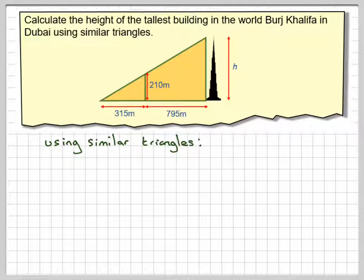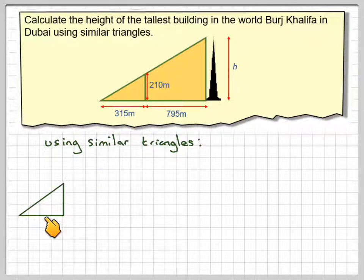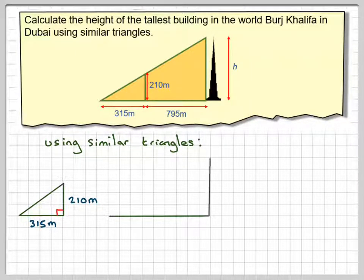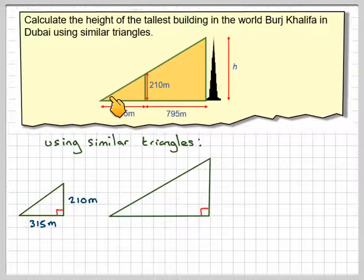Now one good idea when you've got similar triangles is to draw them out separately. So we're going to take that small one and draw it out here. So it's going to be 315 and 210. It is right angled, and then we're going to draw out the large one. The smaller one is actually inside the larger one.